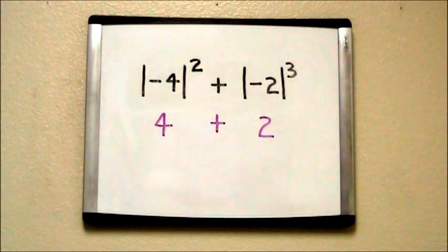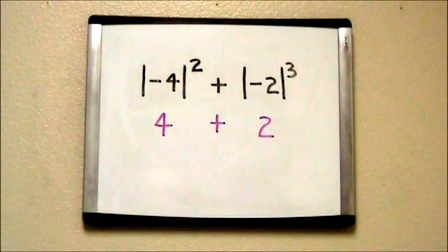Therefore, the absolute value of negative 4 is 4, and the absolute value of negative 2 is 2. Now we can add our exponents.